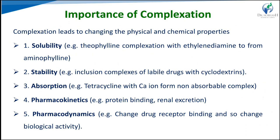Absorption and bioavailability can be affected — for example, tetracycline absorption is reduced when it forms coordination complexes with divalent cations such as calcium, magnesium, or aluminum ions, forming insoluble metal complexes. This alters the absorption, bioavailability profile, and pharmacokinetic profile including protein binding, alteration in excretion, and changes in drug-receptor binding, thereby changing biological activities compared to drugs without complexation.